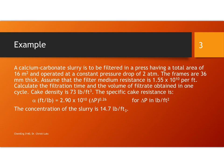Our problem statement says a calcium carbonate slurry is to be filtered in a press having a total area of 16 square meters and operated at a constant pressure drop of 2 atmospheres. That's key, that we're going to be operating at a constant pressure drop. The frames are 36 millimeters thick.